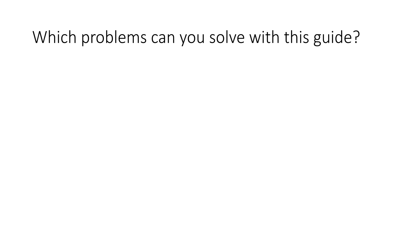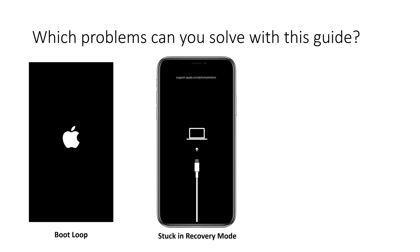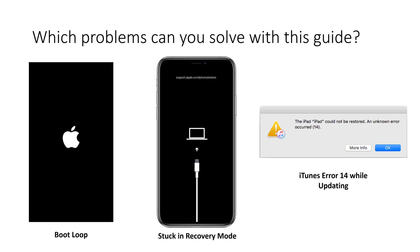So which problems can you solve with this guide? The first one is a boot loop — when your iPhone is always showing the Apple logo and not turning on or off, so you have a constant loop. The second one is being stuck in recovery mode, when your phone shows that you should connect it to iTunes and you cannot hard reset it. The last one is iTunes error 14, occurring when you try to update the firmware via iTunes.